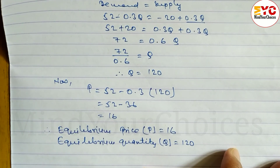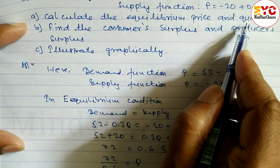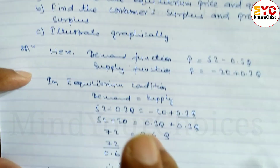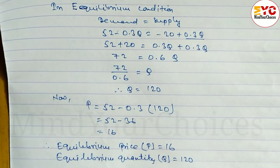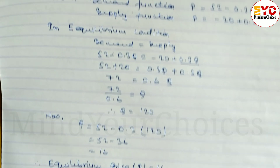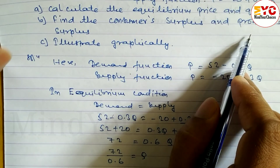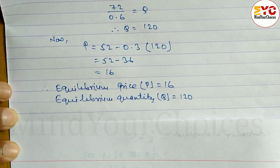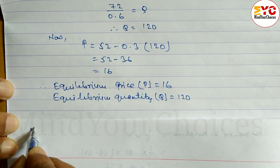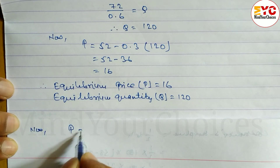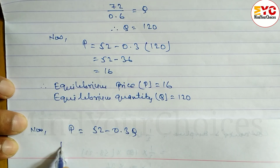Up to here. After this, we have to find out consumer surplus and producer surplus. Before this, we have to draw one table, and then we have to find out the height — then only we can find out consumer surplus and producer surplus. Now let's take the demand function: P = 52 minus 0.3Q.